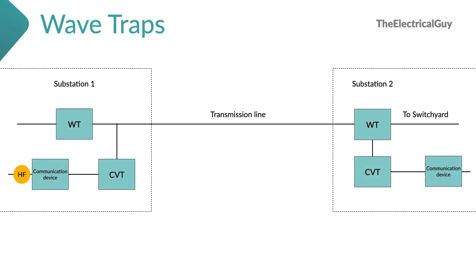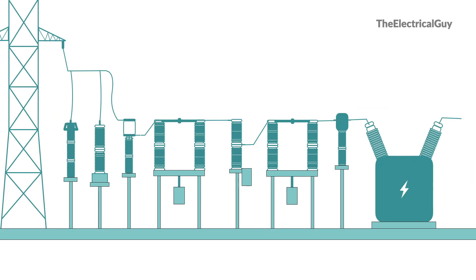For instance, a high frequency communication signal coming from substation 1 will travel via the transmission line to substation 2. Now this signal will try to enter the switchyard. However, the wave trap will block this signal. The signal will then look for another path, and that path would be from the CVT or coupling capacitor to the communication device. This is how wave traps work and why they are really important.